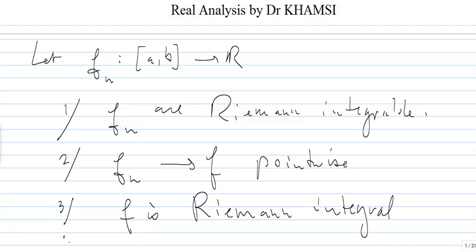And we assume that the sequence is bounded — in other words, that |FN(x)| ≤ M for all N. So there exists an M; they are uniformly bounded. We do not assume that the FNs are decreasing. So what's interesting is that the conclusion is still valid. How do we do that? We need to come back to something that will be either increasing or decreasing.